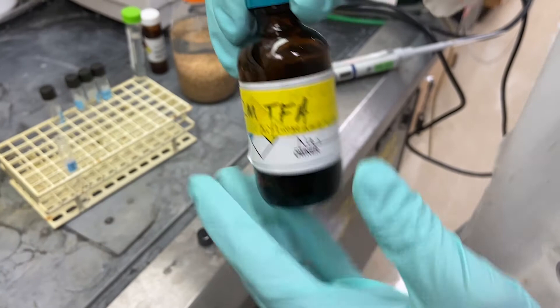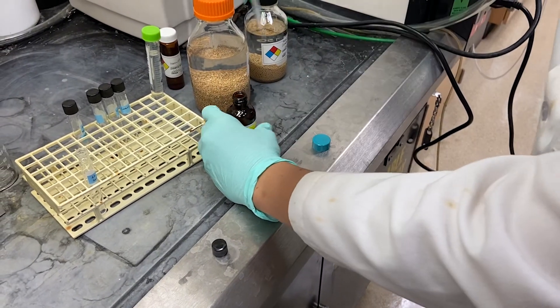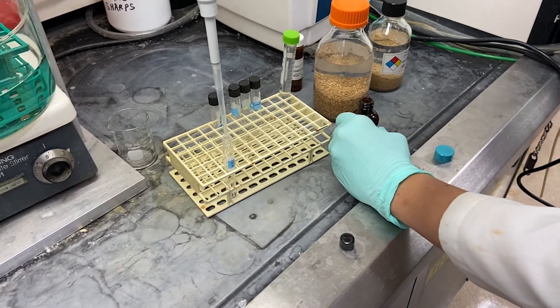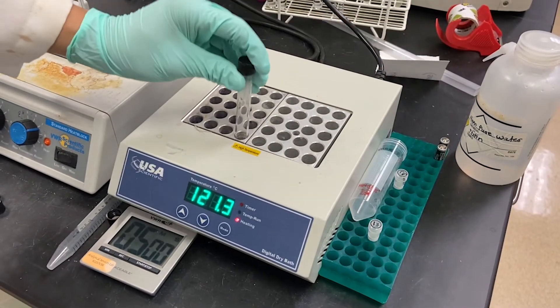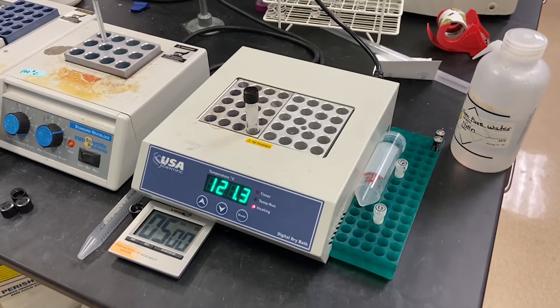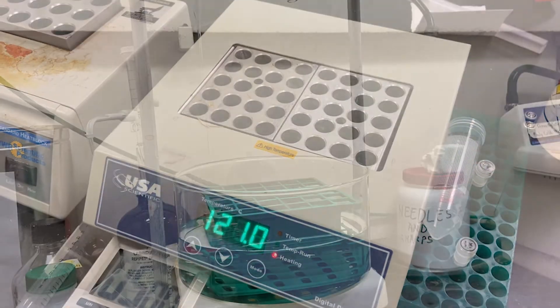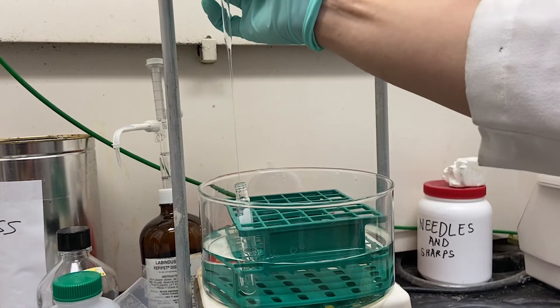Now for the hydrolysis step. We add 400 microliters of two molar TFA to our dried down sample. This is placed on a 121 degrees Celsius heating block for two hours. After two hours on the heating block, the sample is removed and dried down under nitrogen stream.